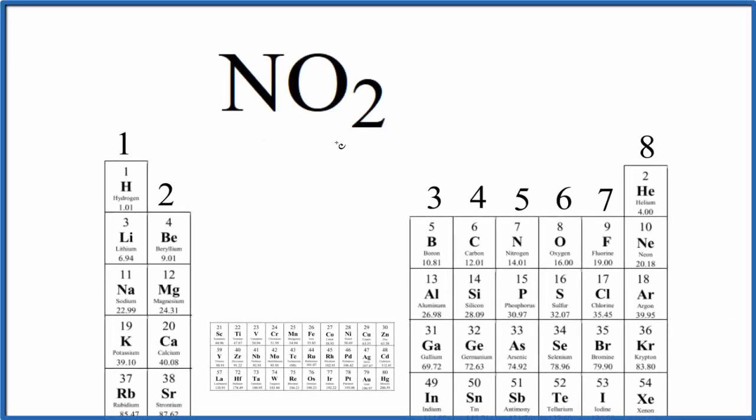To find the number of valence electrons for NO2, we'll use the periodic table here. Each group is labeled with the number of valence electrons. All the elements in group 1 have one valence electron, group 2 has two valence electrons, and so on. We do skip the transition metals, they're a bit more complicated.